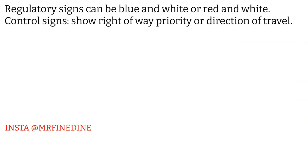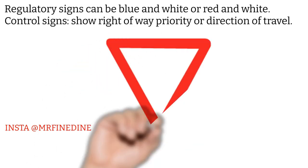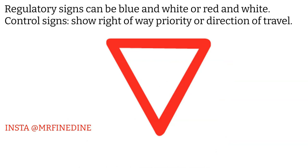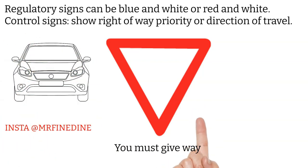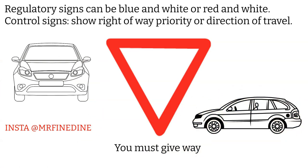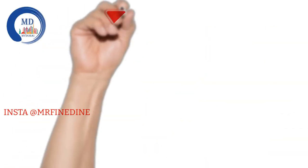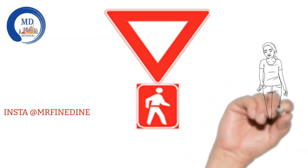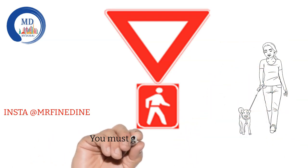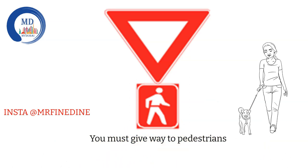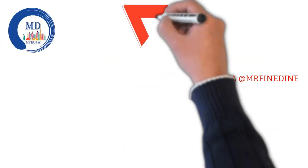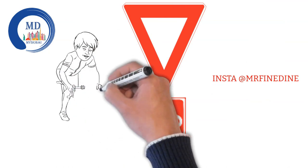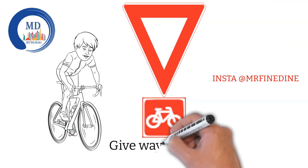One category of regulatory signs is control signs. These signs tell you who has the right of way, who has priority, or give you direction of travel. This common sign means you must give way — if you are on a road where traffic is coming from the other side, you need to stop and give way to other vehicles. The give way sign combined with a pedestrian symbol means you must give way to pedestrians — usually seen near pedestrian crossings. Combined with a cycle sign, it means you must give way to cyclists.